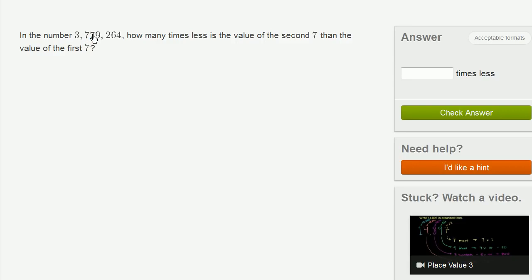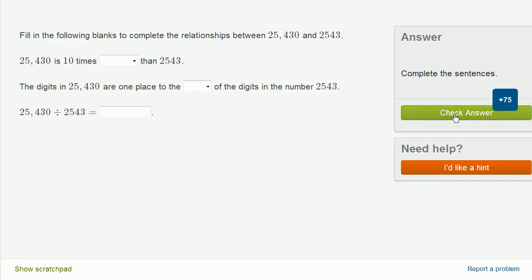So the second 7 is one-tenth the value of the first 7. Or another way of thinking, it's 10 times less. This is 70,000, and this is 700,000. So the value of the second 7 is 10 times less than the value of the first 7. Let's do one more. This is fun.